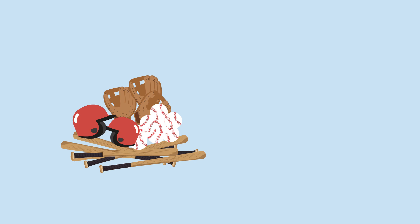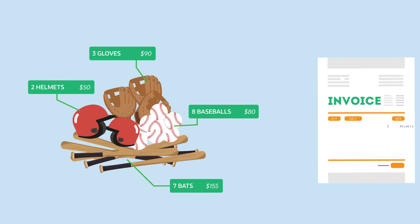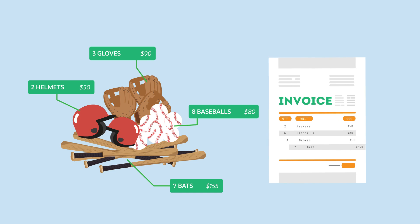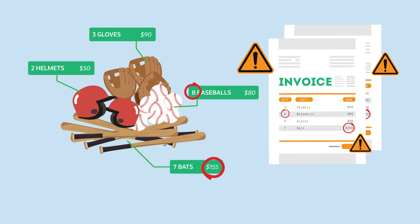NetSuite's automated matching capabilities ensure goods and services have been received with the correct pricing applied by comparing order details, receiving documents, and invoice amounts. Discrepancies like inconsistent order quantities, incorrect pricing, or duplicate invoices are automatically flagged to the AP team for review.